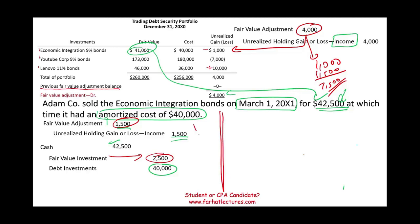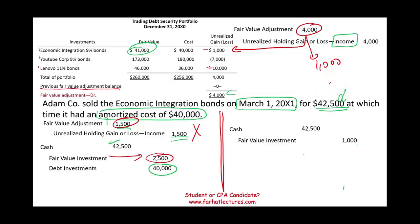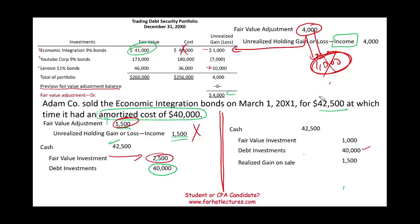The other way to book the transaction is without first writing it up to market. You receive cash of $42,500, remove the $1,000 fair value adjustment that relates to Economic Integration, credit the investment at cost of $40,000, and book a realized gain of $1,500 — since from the beginning of the year the bond went from $41,000 to $42,500. Both methods end in the same place: total gain of $2,500 over the life of the bond, the same cash received, and the bond removed.